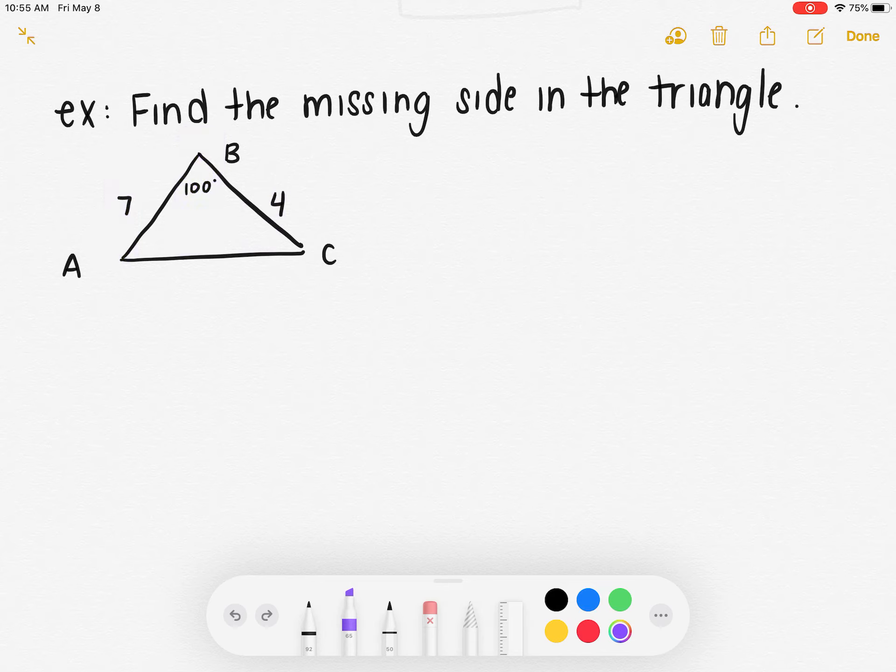I also now need to decide which formula for law of cosines I need to use. I notice it's not asking me to find a specific angle, but it does give me angle B. So because it gives me angle B, I'm going to use the formula that has angle B in it. That means I'm going to use the one that starts with side B.